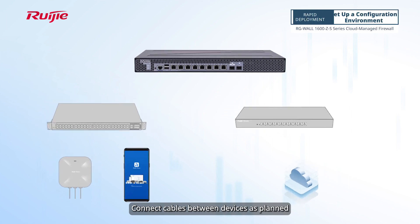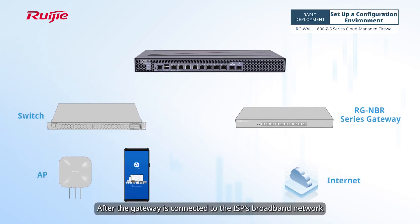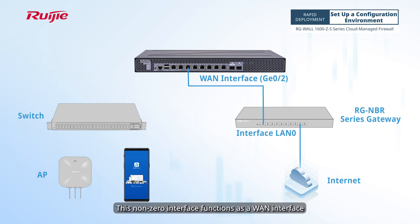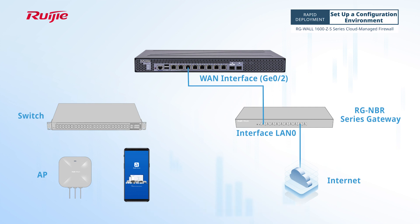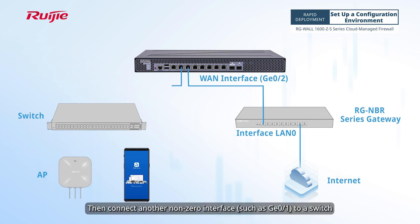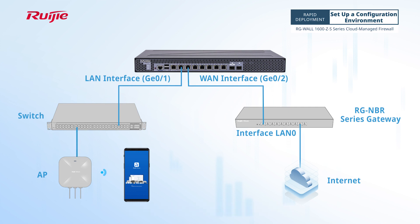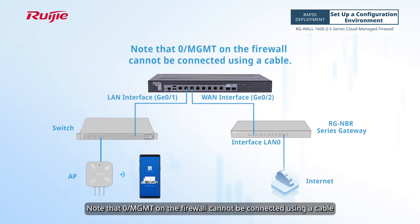Connect cables between devices as planned. After the gateway is connected to the ISP's broadband network, use a network cable to connect a non-zero interface to interface LAN 0 of the gateway — this non-zero interface functions as a WAN interface. Then connect another non-zero interface to a switch — this serves as a LAN interface. Connect the AP to an interface on the switch. Note that 0/MGMT on the firewall cannot be connected using a cable.